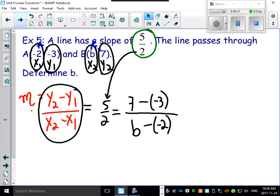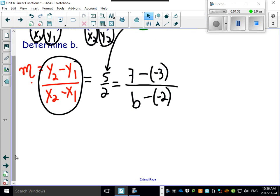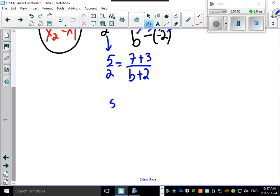So we got lots of minus-minus stuff happening here. Let's give ourselves a little bit more room. Simplify this a little bit: you have 5 over 2 - that's this guy, nothing changed. 7 minus a minus 3 is 7 plus 3. b minus a minus 2 is b plus 2, because remember minus-minus means plus.